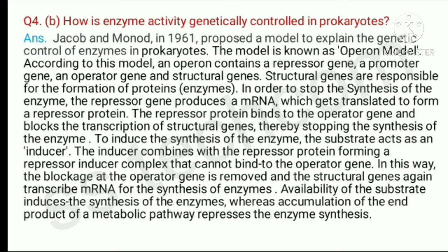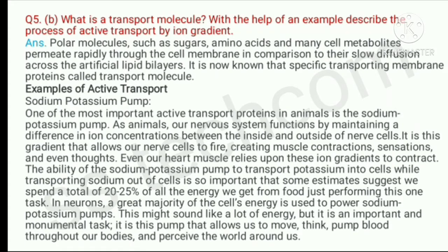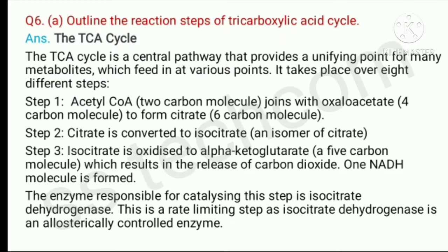Question number 4, B part: How is enzyme activity genetically controlled in prokaryotes? Question number 5, A part: What is mediated permeability and how is it different from simple diffusion? Question number 5, B part: What is a transport molecule? With the help of an example, describe the process of active transport by ion gradient.